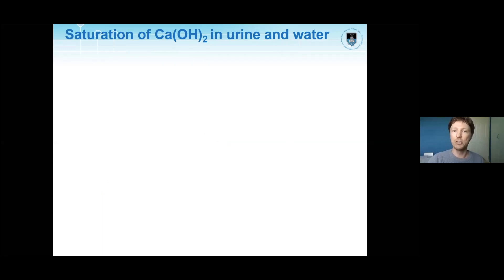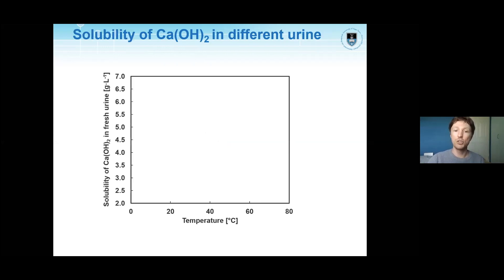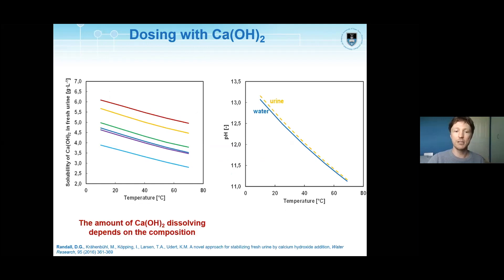When we compare this in urine versus water, the very different compositions still result in pretty much the same pH when you add calcium hydroxide as a function of temperature. When we add calcium hydroxide to different types of urine — represented by different colored curves — the amount needed to create a saturated solution varies. We therefore recommend a dosage of 10 grams of calcium hydroxide per liter of urine. The saturation pH is fixed at a specific temperature.